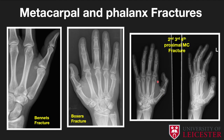Fractures of the second, third, and fourth metacarpal bases can also occur together. Here you can see a significant oblique fracture of the second metacarpal, with associated fractures at the bases of the third and fourth metacarpals. The lateral oblique view demonstrates the considerable angulation and displacement present.